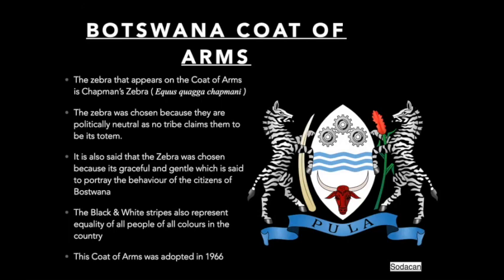There are different theories as to why the zebra was chosen for Botswana's coat of arms. One is that the zebra is politically neutral — it is not a totem for any of the tribes within the country, so there would be no disputes. Another theory is that the zebra was chosen because it is graceful and gentle, portraying the character of Botswana's citizens. A third theory is that the black and white stripes represent the equality of all people of all colors within the country. The coat of arms was adopted in 1966, the same year Botswana gained independence.